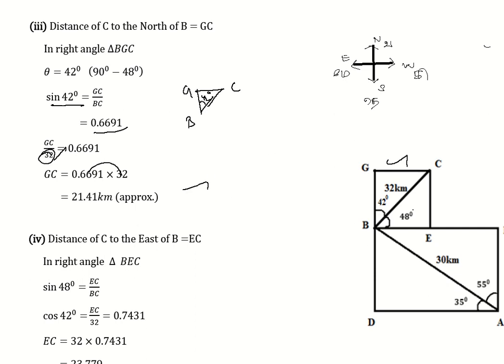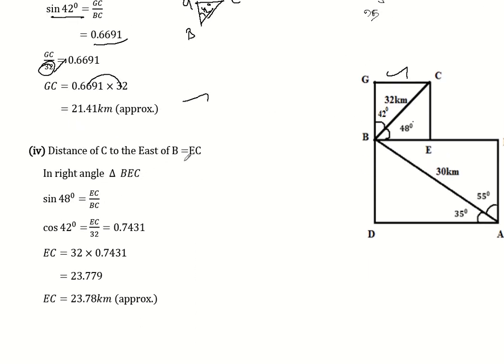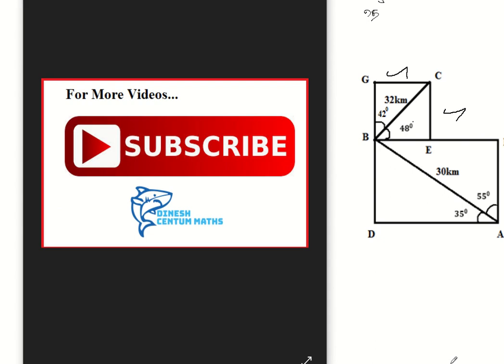The distance of C to east of B is EC. Right angle triangle BC. Sin theta is opposite by hypotenuse. Opposite is EC, hypotenuse is BC. Cos 42, EC by BC equals 32. Cos 42 when you multiply it is 0.7431. So EC equals 32 times 0.7431, which is 23.779. EC is 23.78 kilometers approximately.